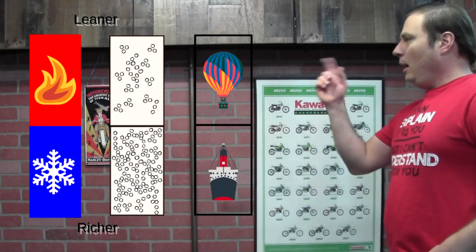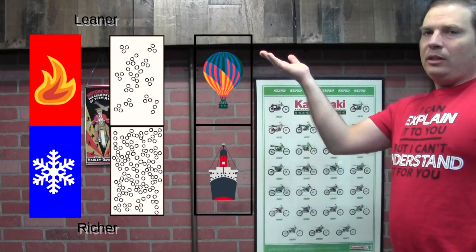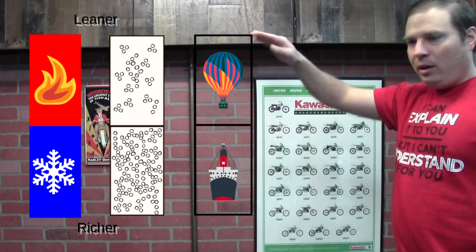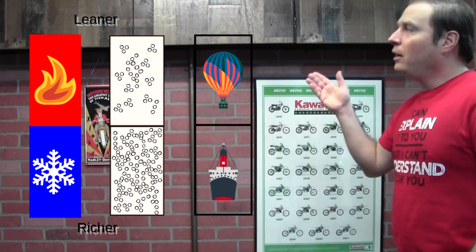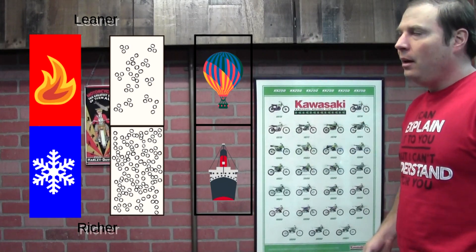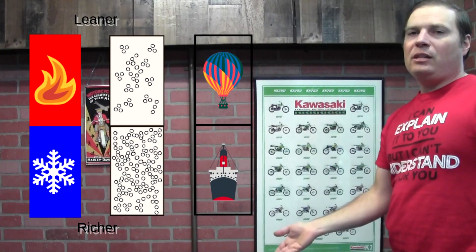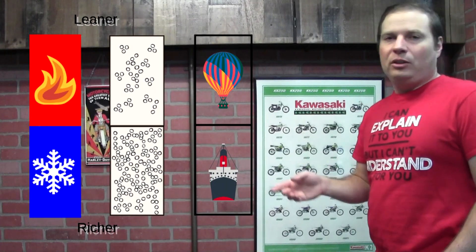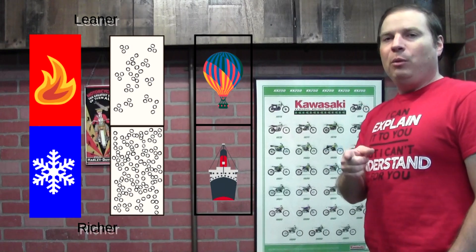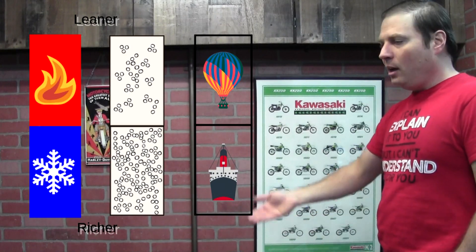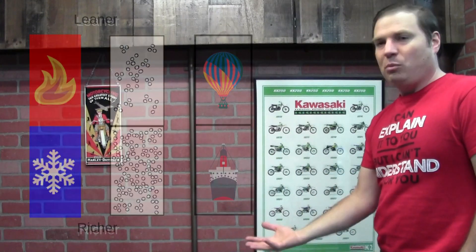Let's go over the three things that are out of your control that will affect jetting. First is air temperature — higher air temperature means air is less dense; lower air temperature means the air is more dense, meaning less or more fuel respectively. Humidity plays a factor as well, closely related to air temperature — high humidity means more fuel, low humidity means less fuel. And the third one is altitude: high altitude means thinner, less dense air; lower altitudes mean the air is more dense, so there's more available oxygen.